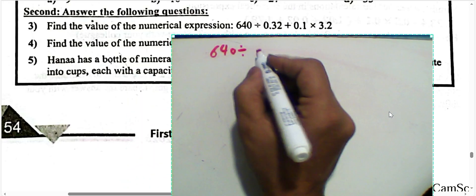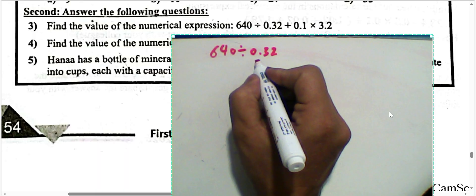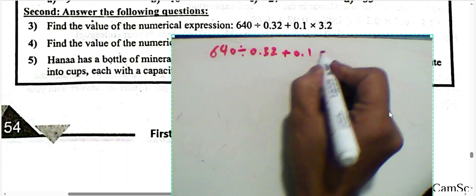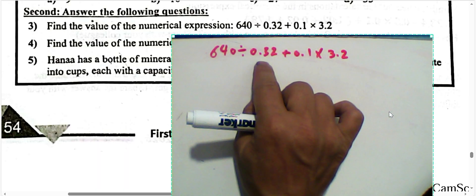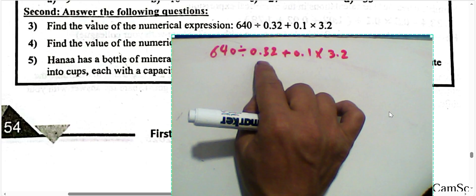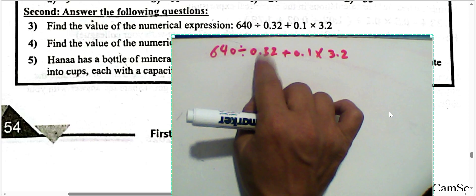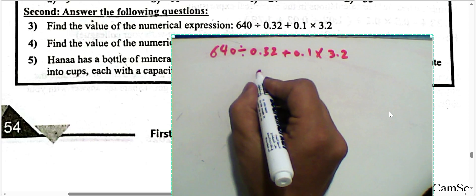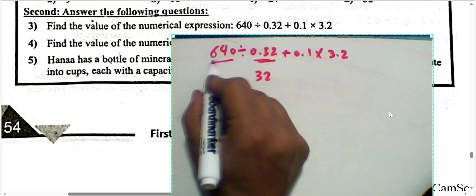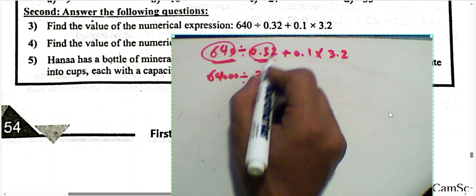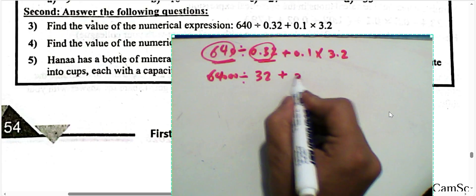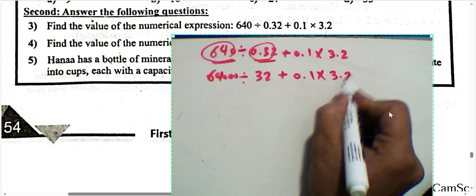Next question: find the value of the expression 640 divided by 32 hundredths, plus (1/10) times 3.2. First step — convert the divisor by multiplying by 100 to cancel the decimal point. Multiply both the dividend and divisor by 100: add two zeros behind the dividend. Then continue with the second part: (1/10) times 3.2.